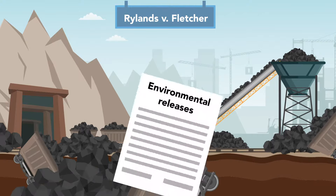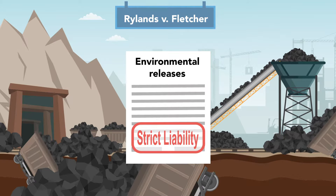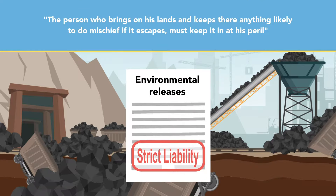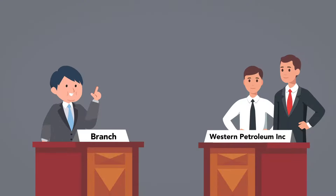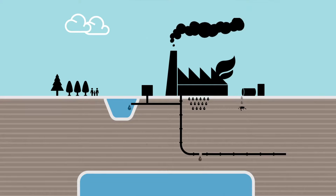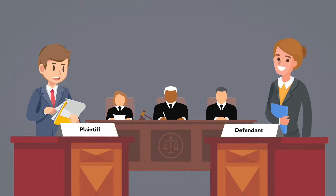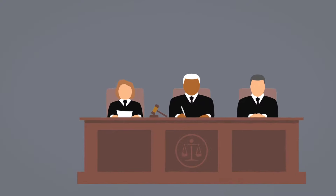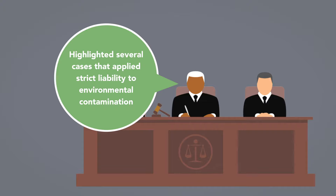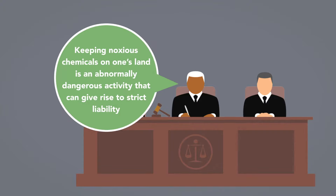That case established the precedent for strict liability applied to environmental releases that is still relevant today. It is held that the person who brings on his lands and keeps there anything likely to do mischief, if it escapes, must keep it in at his peril. The case of Branch v. Western Petroleum Inc. provides a prime example of how strict liability theories can apply to environmental pollution. In Branch, the defendant company disposed of contaminated water in underground wells, but because the geology in the area was permeable, the pollution seeped into the Branch's wells, making them unusable. The court determined that the defendant was strictly liable for the water pollution that escaped from its land, holding that keeping noxious chemicals on one's land is an abnormally dangerous activity that can give rise to strict liability.